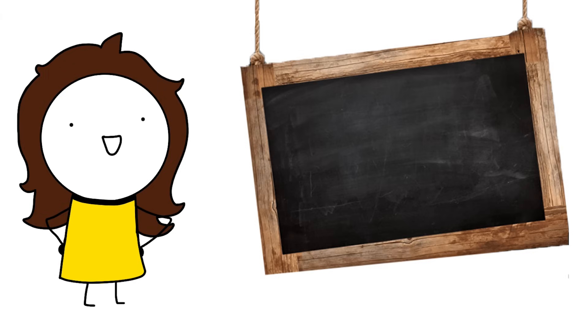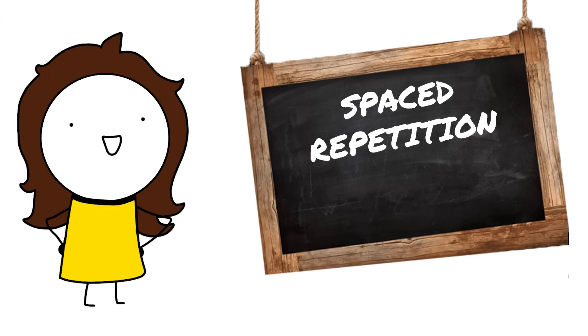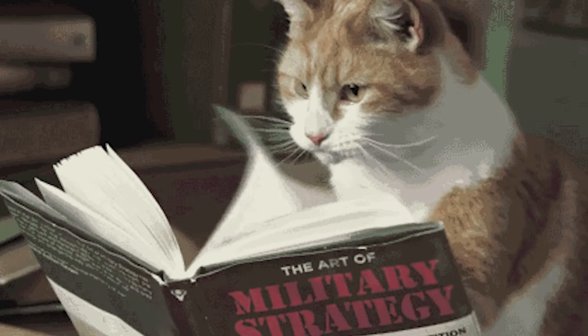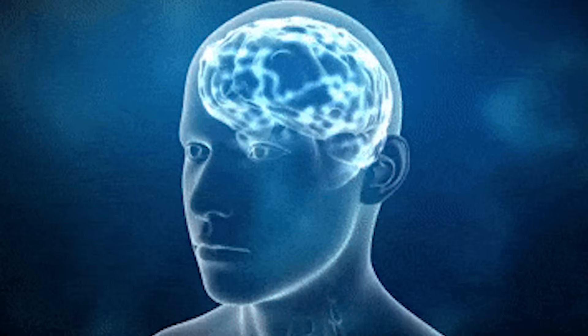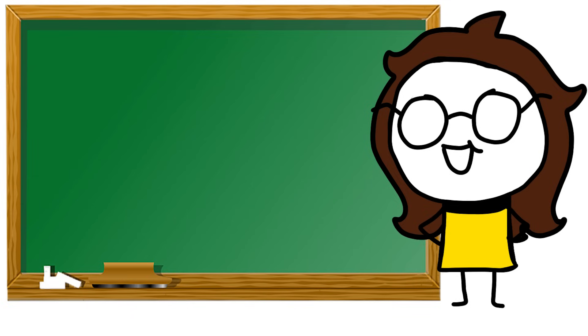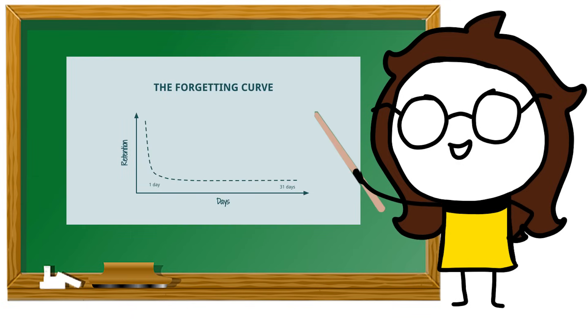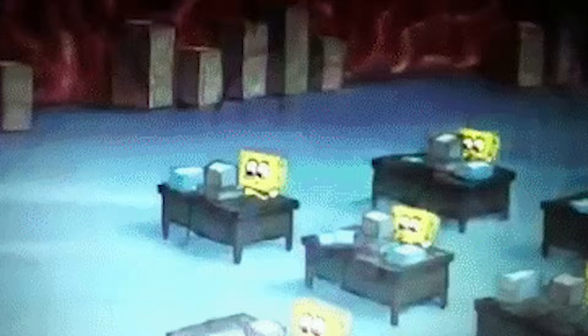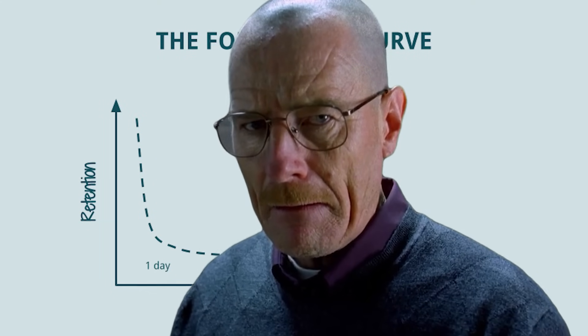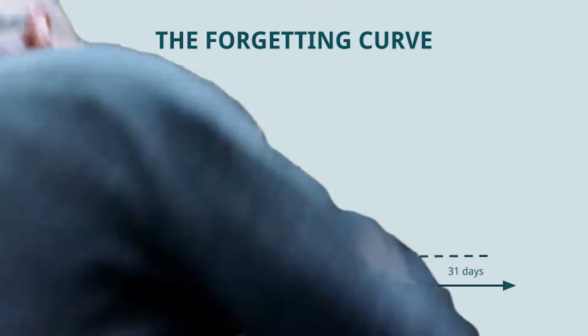First, I want to talk about spaced repetition, which is a popular study technique that involves reviewing information at increasing intervals over time to help it stick in your long-term memory. This method is based on the concept known as the forgetting curve, which shows that we forget things quickly after learning them. However, every time we review the information, our memory gets stronger and forgetting slows down — so spaced repetition basically fights the forgetting curve.